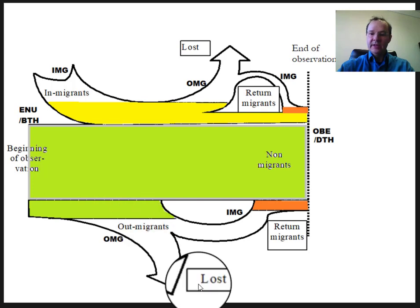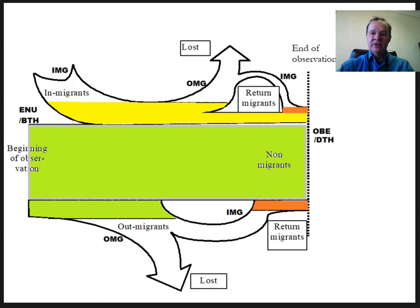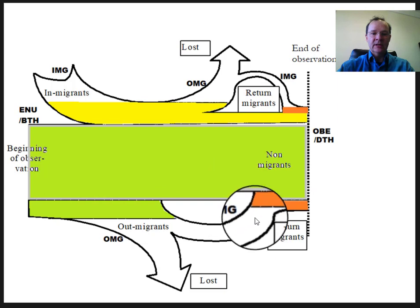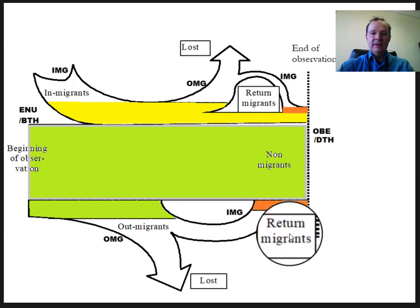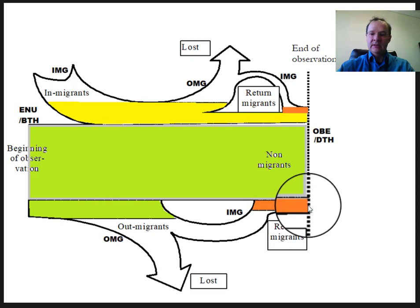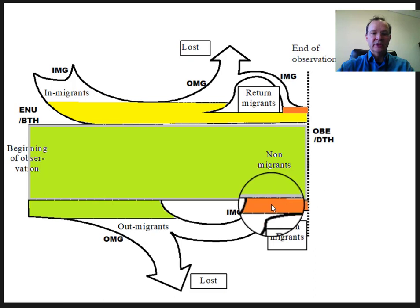Those lost to follow-up will never be seen again. Until the time of their first out-migration, they are considered as non-migrants. Among those who out-migrated, some will eventually return and be considered as returned migrants at the time of right censoring. The time at risk as returned migrants is represented in orange here.